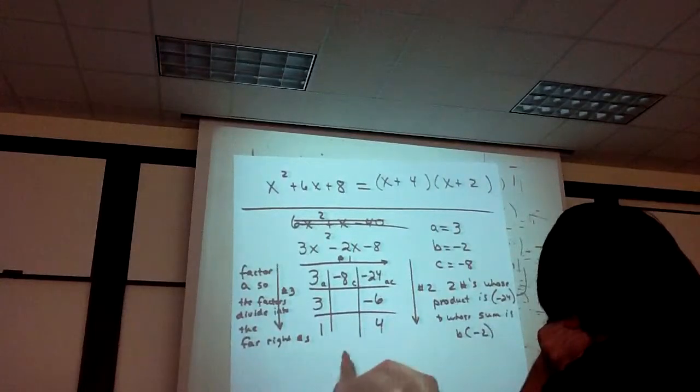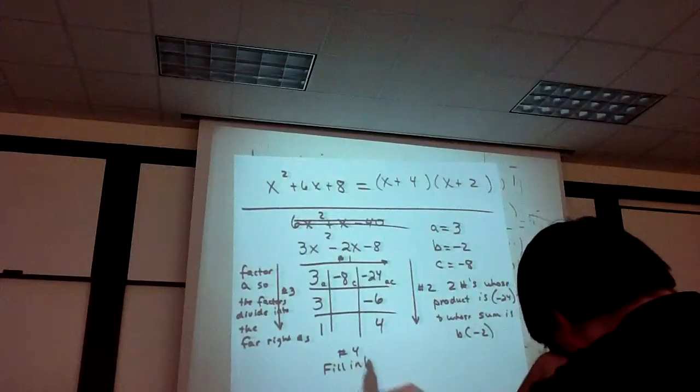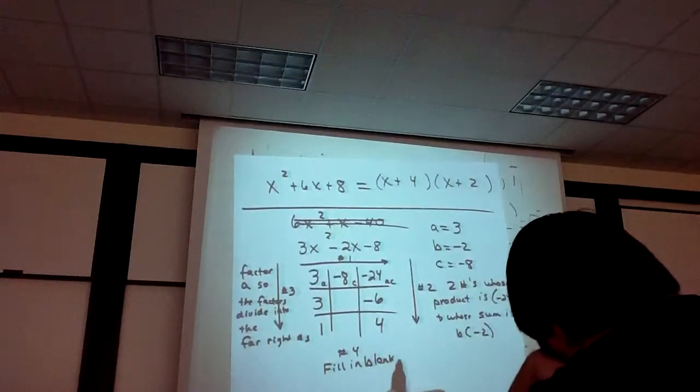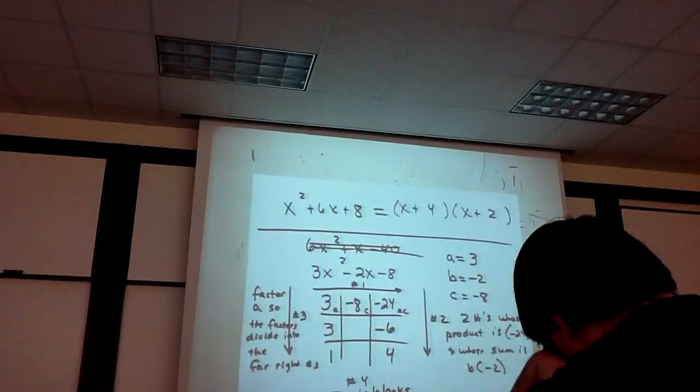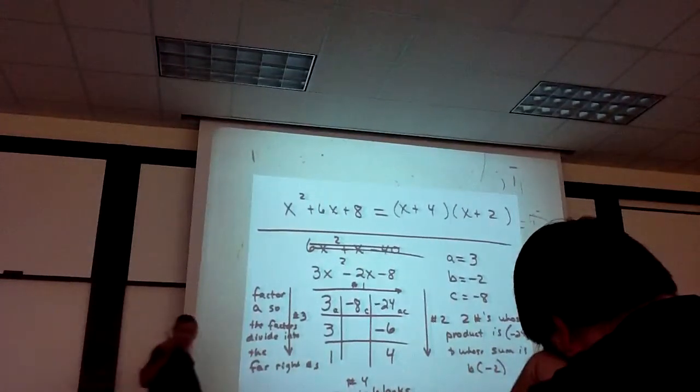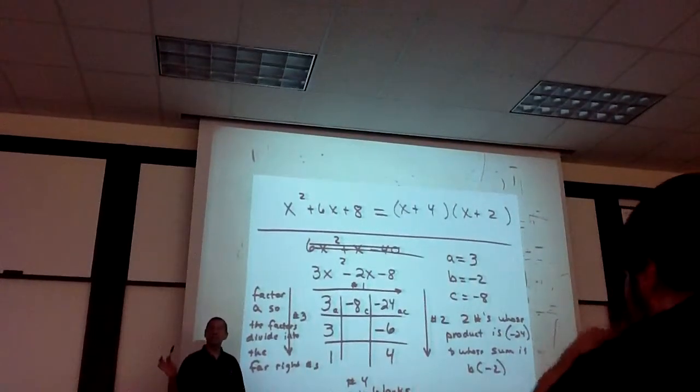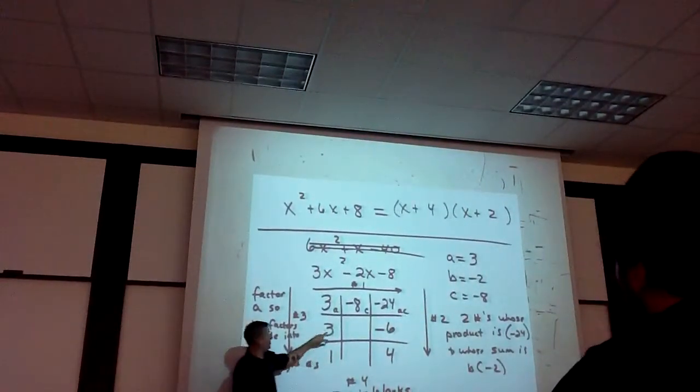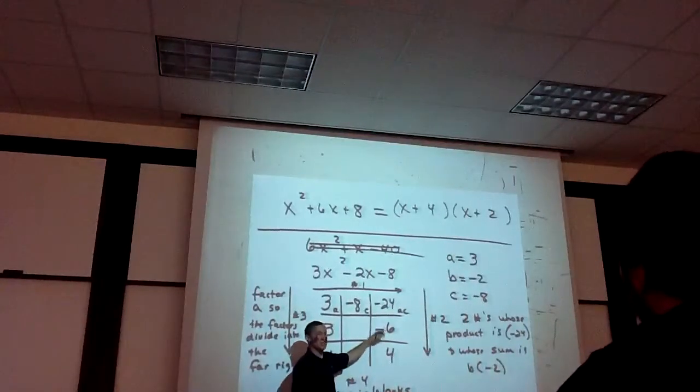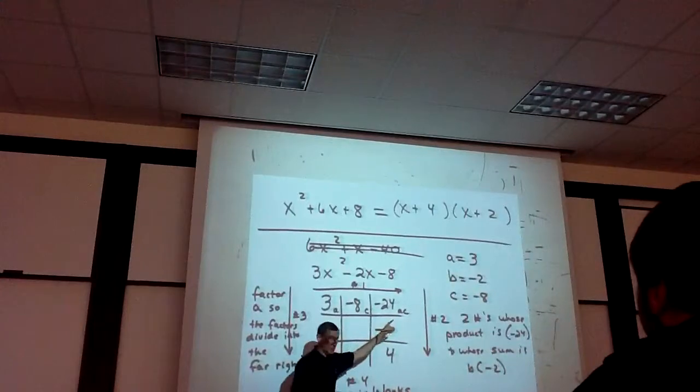Number four is fill in the blanks. Now notice, if you will, every one of these rows and columns is a multiplication problem. So 1 times 3 is 3. 4 times negative 6 is negative 24. 3 times negative 8 is negative 24.